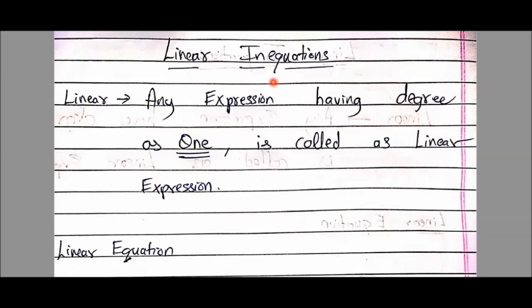Before starting with the actual topic, let's understand what we mean by linear. Any expression having degree as one is called a linear expression. The expression can have one variable, two variables, or three variables, but if the degree is one, we call it a linear expression.